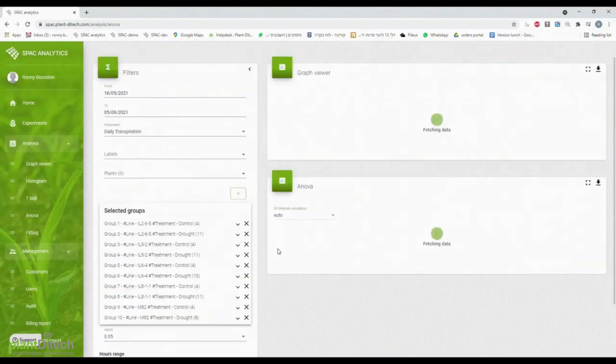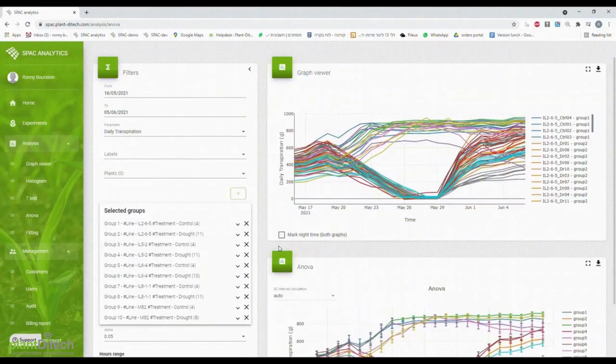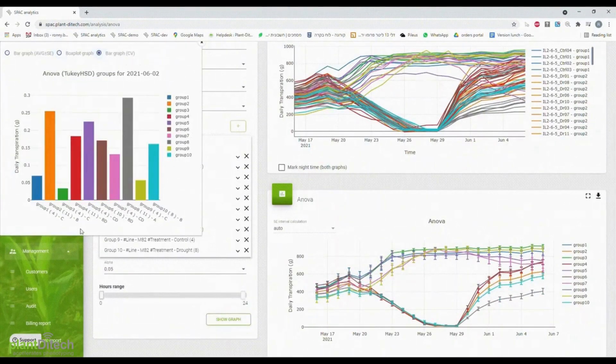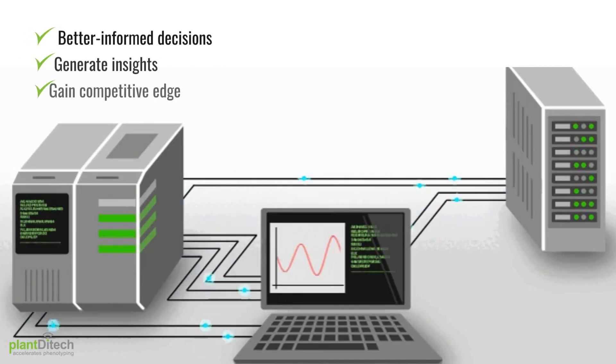SPAC Analytics allows you to automate the data flow process, making it easy to update and expand the data with the latest plant information without any manual intervention. This leads to better informed decisions, generates insights, and helps you gain a competitive edge.